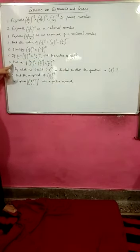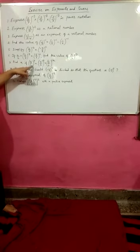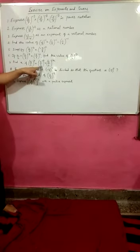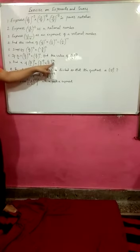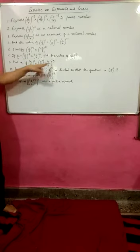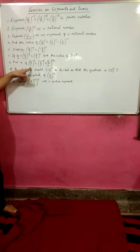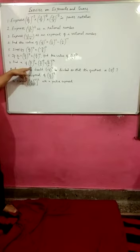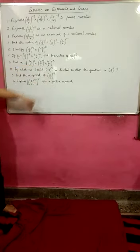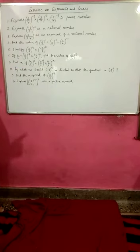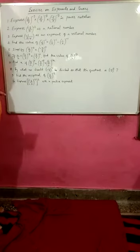Next: find the value of x if (5/6)^7 multiplied by (5/6)^-9 equals (5/6)^2x. Whenever there is the same base in a product, the powers are added together. In this question, since both sides have base 5/6, the bases cancel, and you will equalize the powers to get the value of x.